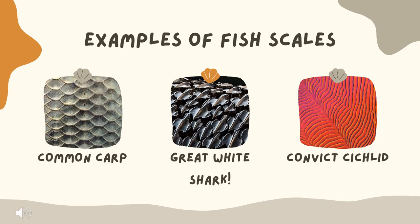Next we're going to go over a few examples of fish scales. On the left we have the cycloid scales of the common carp — you can see how they lay fairly flat and overlap like shingles on a roof. In the middle we have the scales of a great white shark, which many people don't realize do have scales. Lastly, we have the ctenoid scales of the convict cichlid, where you can also see the rings that indicate the age of the fish. Now I'll pass it to Emily to talk about reptiles.